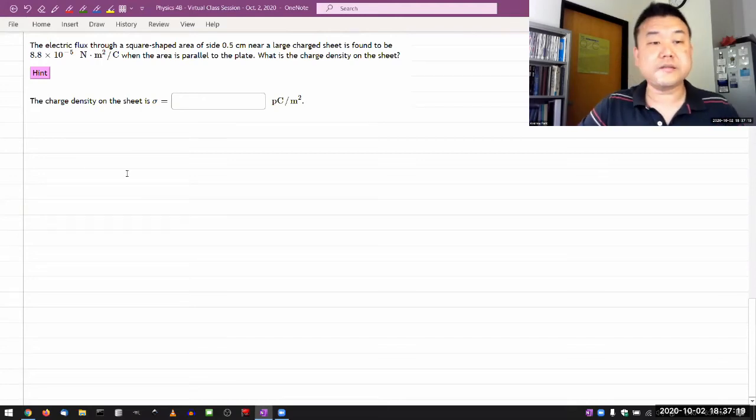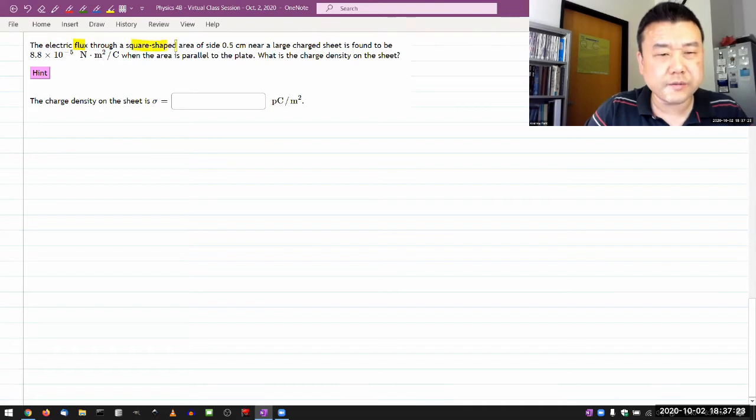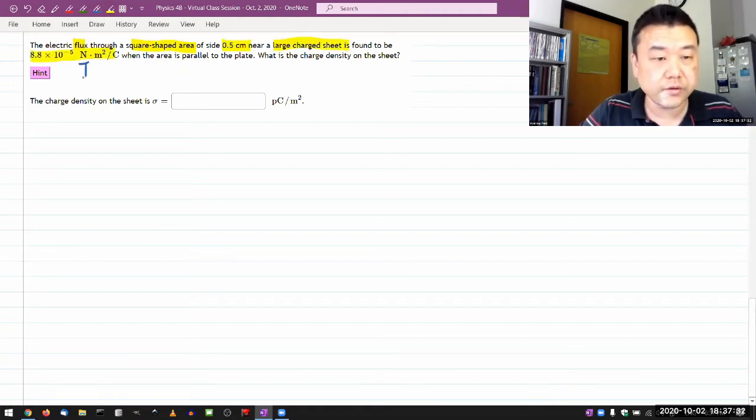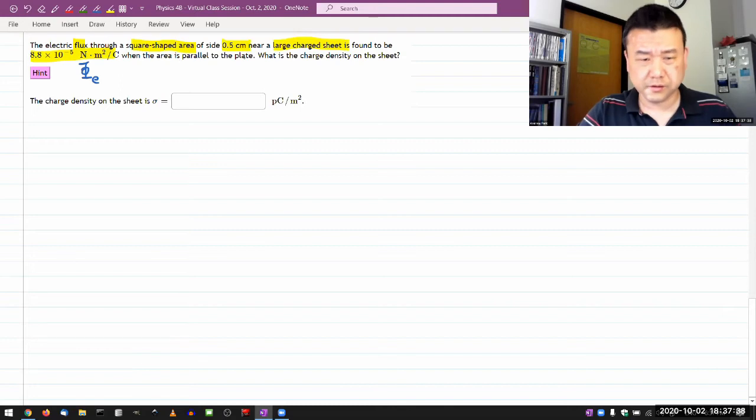Okay, so it says the electric flux through a square-shaped area of some size near a large charged sheet is found to be some value. Let me label this electric flux, capital VE, and the area is parallel to the plate.